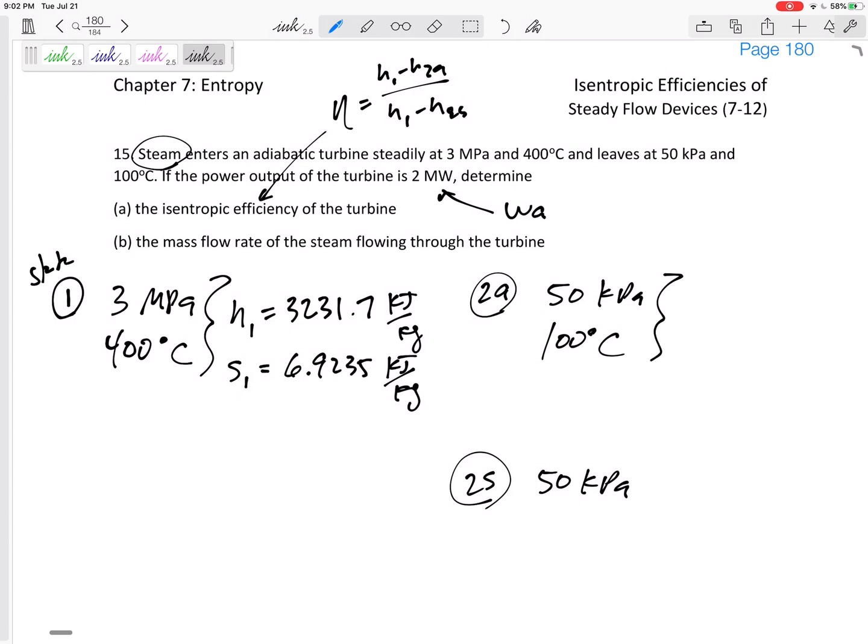Now how about we do the same thing right here for the actual outlet properties. With that pressure and that temperature it is steam. h2 actual is 2682.4 kilojoules per kilogram. We could write off any other properties we want to.